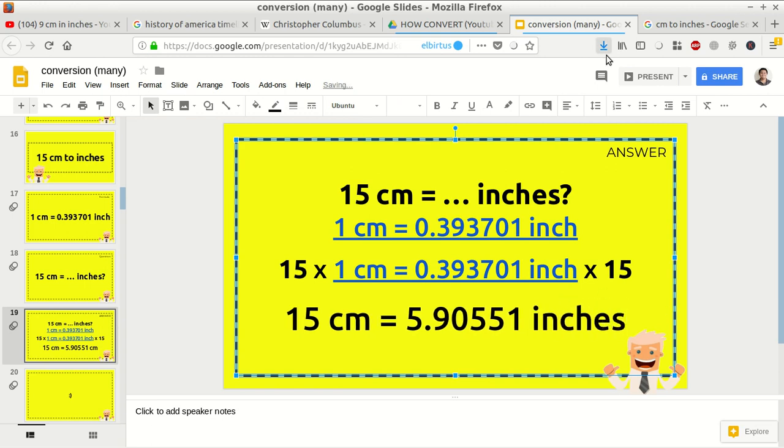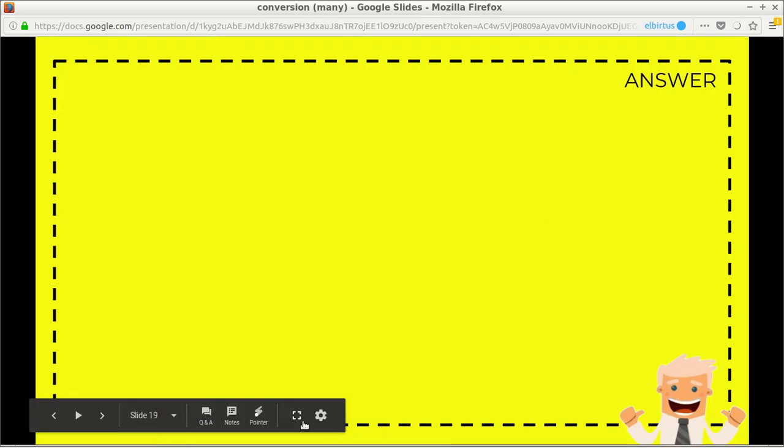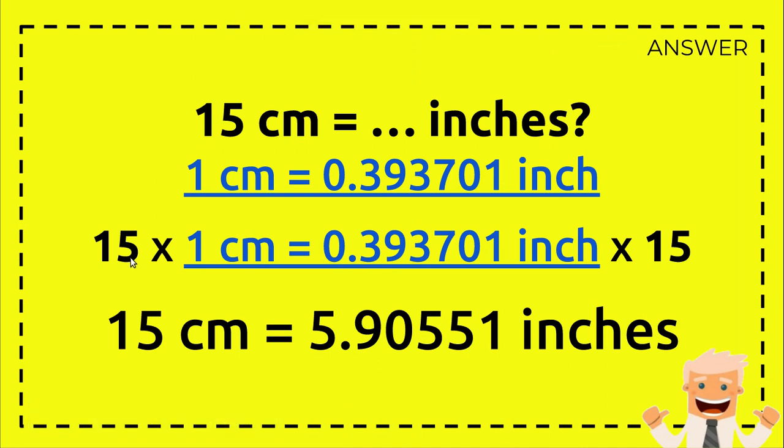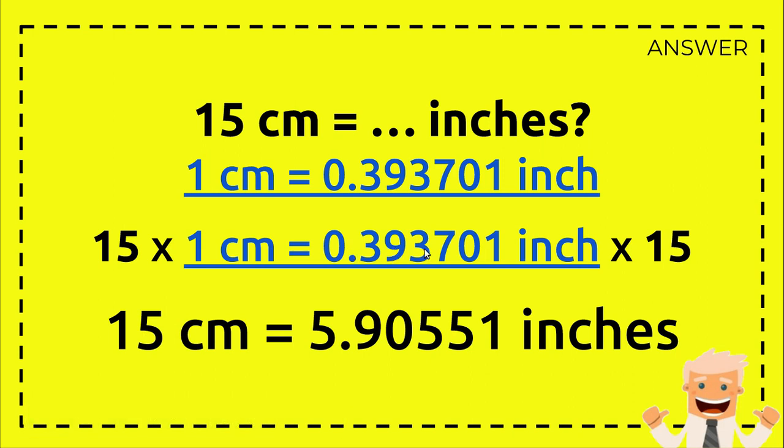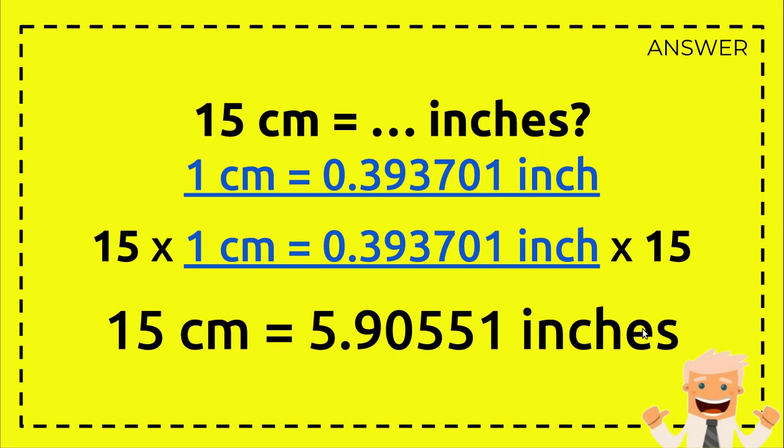Okay, so 15 times one centimeter equals 15 centimeters, and 15 times 0.393701 inch equals 5.90551 inches. All right, that's all, very easy.